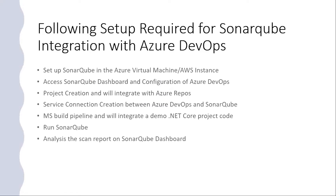The following setup is required for SonarCube integration with Azure DevOps. Step 1: Set up SonarCube in the Azure virtual machine or AWS instance with a publicly accessible URL. Step 2: Access the SonarCube dashboard under configuration of Azure DevOps. Step 3: Project creation and integration with Azure DevOps. Step 4: Service connection creation between Azure DevOps and SonarCube. Step 5: MS Build pipeline integration with a demo .NET Core project. Step 6: Run SonarCube. Step 7: Analyze the scan report on the SonarCube dashboard.